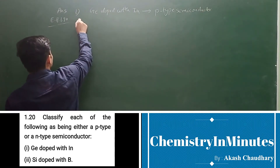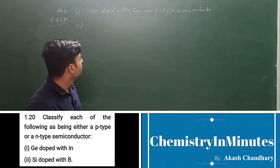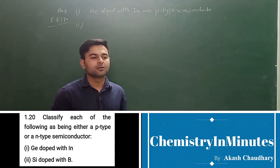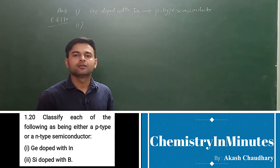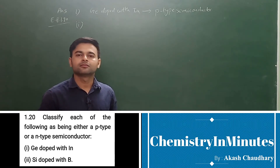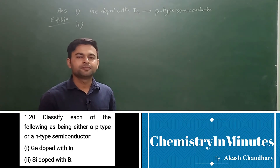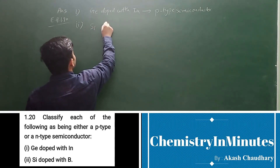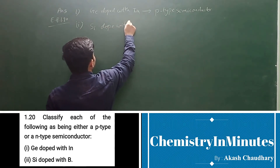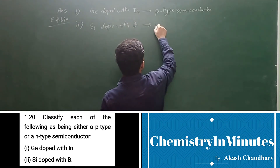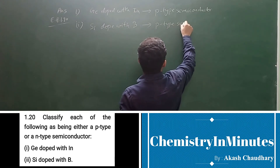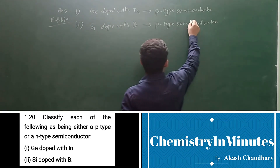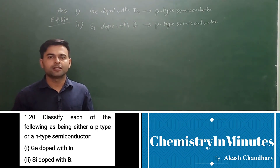Now the second one is silicon doped with boron. If silicon is doped with boron, there will be a hole forming in the crystal, so it is also a p-type semiconductor. This will be the answer to the question.